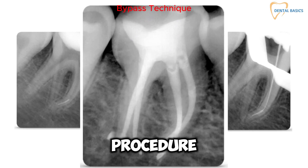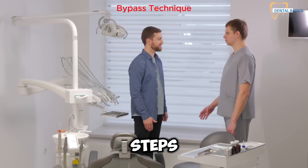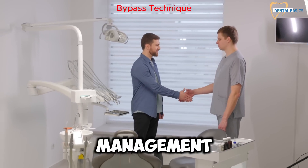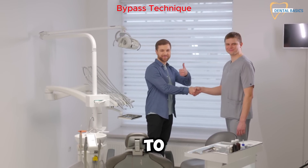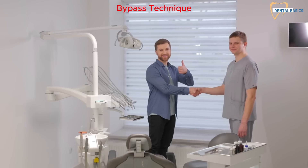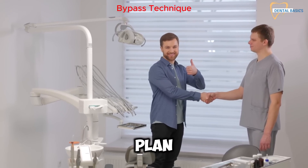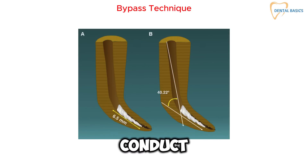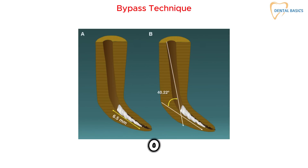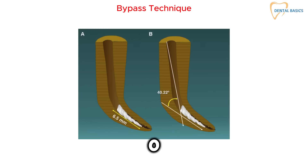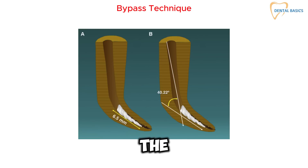This procedure encompasses several critical steps. First, patient management and communication: establish open communication with the patient to address concerns and explain the treatment plan. Second, preoperative assessment: conduct a thorough radiographic analysis to determine the exact position of the fractured file, the curvature and direction of the root canal, and the length of the fractured instrument.